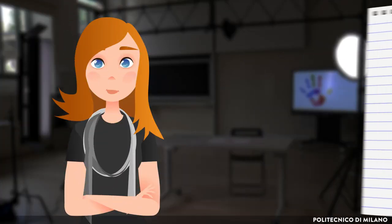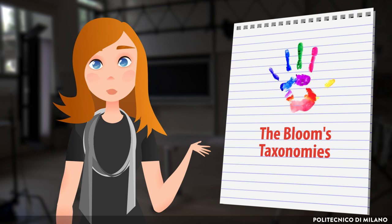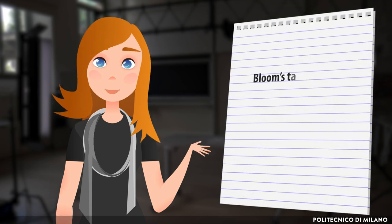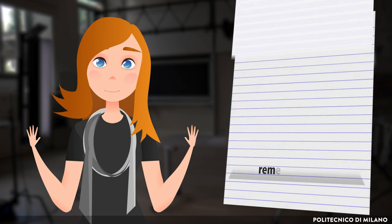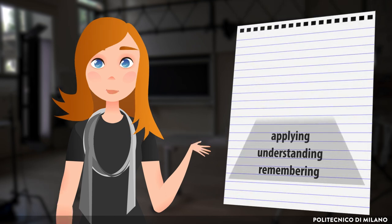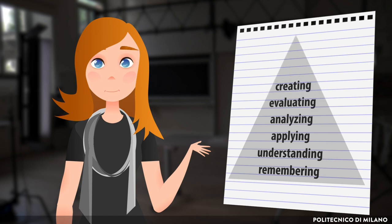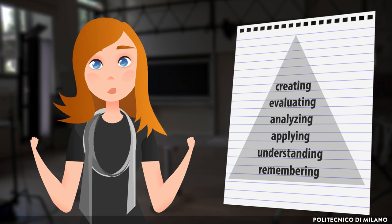To sum up, the key message is that Bloom's Taxonomy, the one reviewed by Krathwohl and Anderson in 2001, helps us in designing intended learning outcomes that can cover different dimensions: remembering, understanding, applying, analyzing, evaluating, and creating. These dimensions can help us to build a wider ecosystem of abilities for the students of the new millennium.